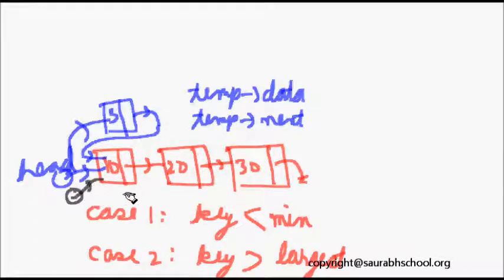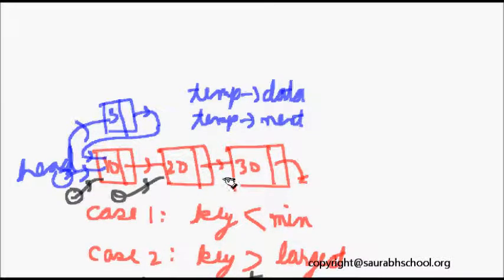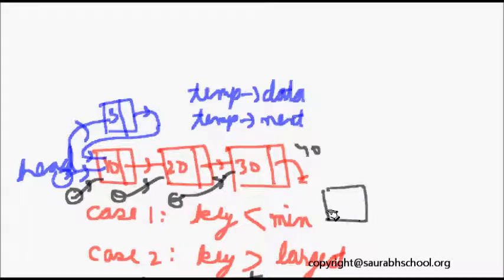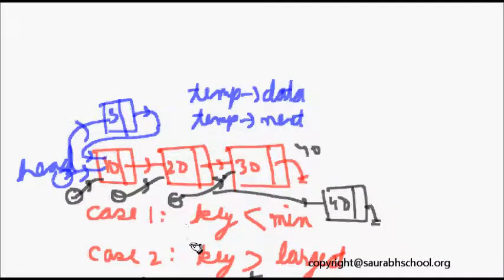For Case 2, if the key is greater than the largest element, I traverse all the way to the end. We should always check temp next so that when we find the right element we can insert before it. If key is greater than 30, say 40, I make a new node with data 40, set temp next to the new node, and set the new node's next to null.